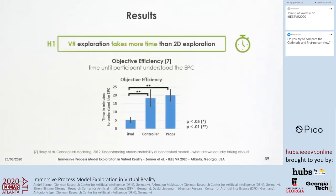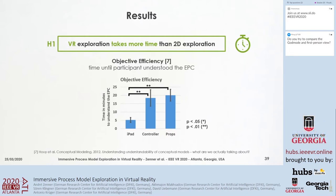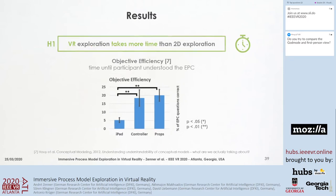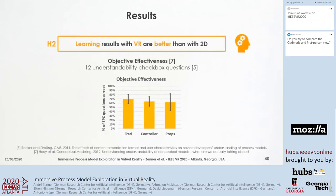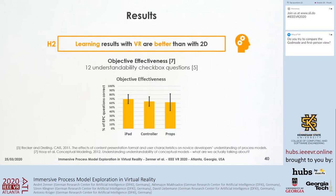Looking at the results, we can confirm our first hypothesis, which expected that VR exploration takes more time than 2D exploration. Users can learn the test EPC much faster on a 2D interface with an iPad than with VR exploration, whether using VR controllers or passive haptic feedback. However, we cannot confirm our second hypothesis, which expected the learning results with VR to be better than with 2D interfaces — the objective effectiveness results using 12 understandability checkbox questions did not show a significant effect across conditions.